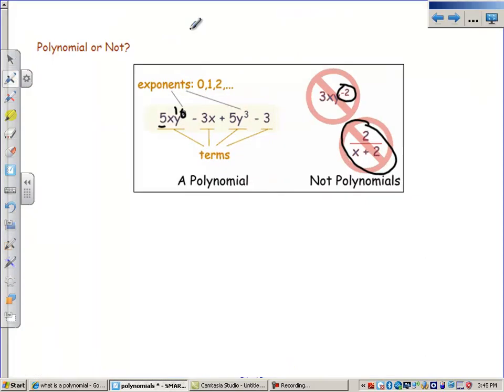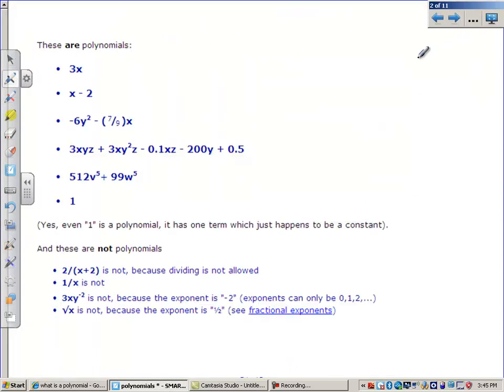Alright, so let's take a look at some other things here. Here's some more examples of polynomials. Coefficient of 3, exponent of 1. Here I've got a coefficient that's a fraction. It's okay to have fractions with numbers. You just can't have variables in a fraction. So these are all examples, and yes, even 1 is a polynomial.